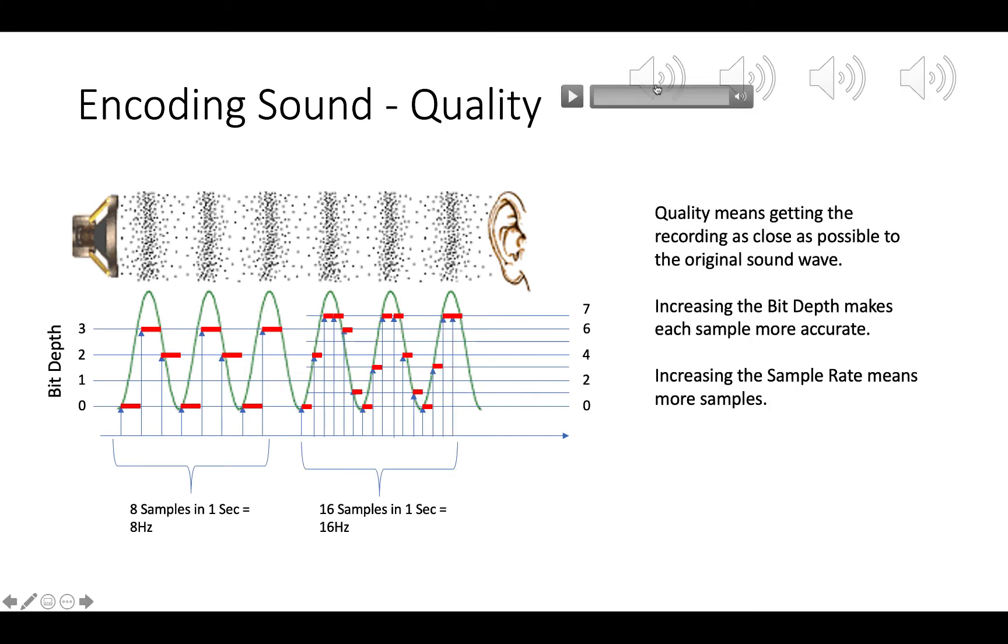Once again, you're never going to get perfect sound quality because sound waves are analog and computers are digital. What we're looking to do is to get sound quality that is good enough for our needs. And the way that we can get that sound quality is by adjusting the samples and adjusting the bit depth.